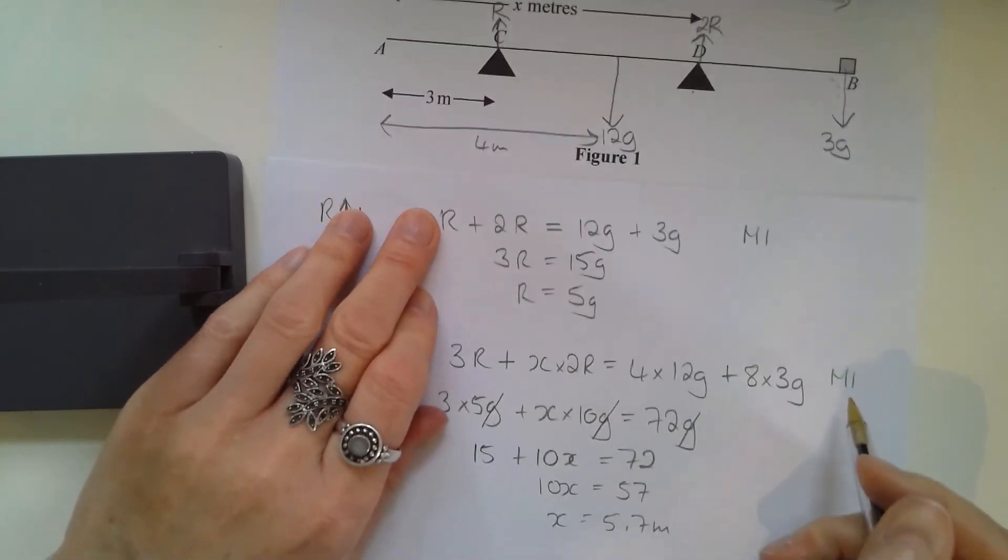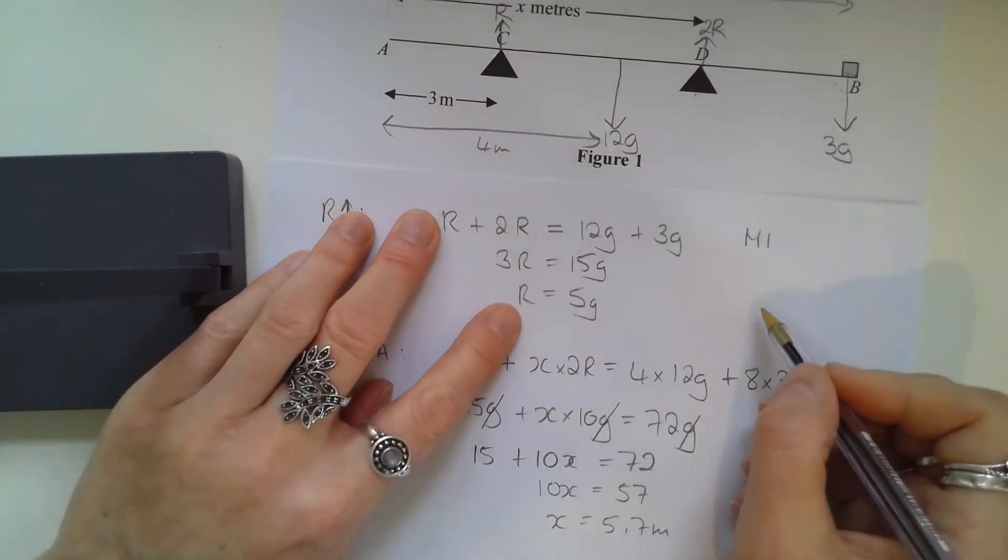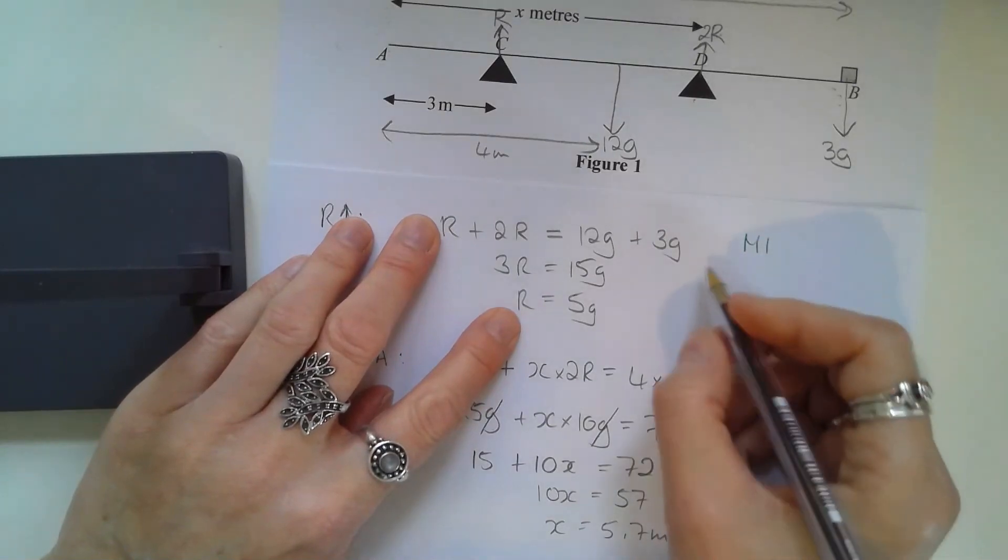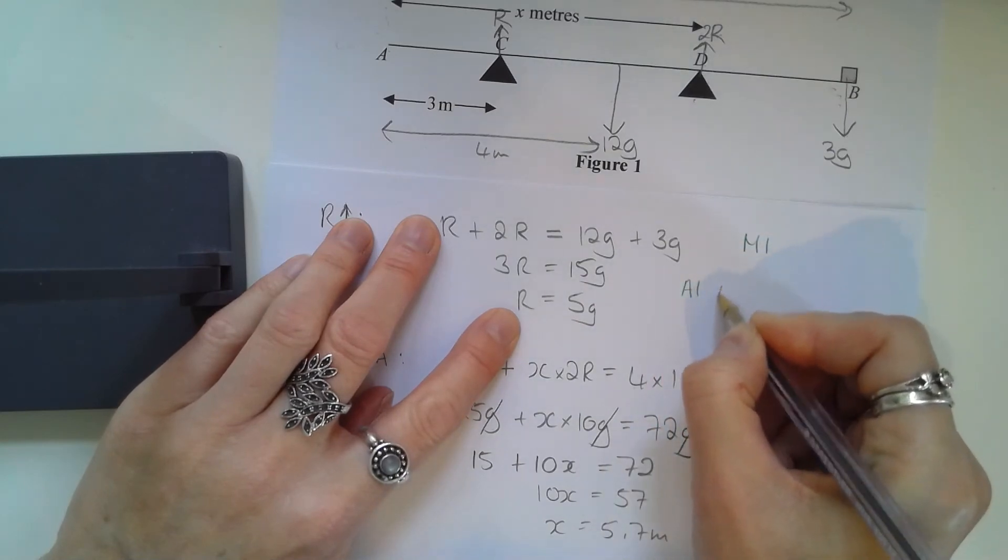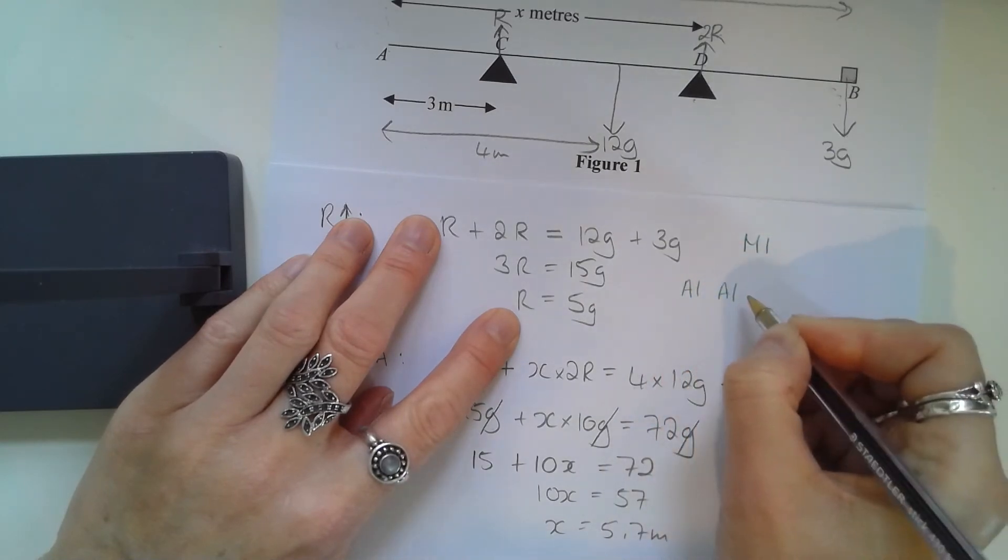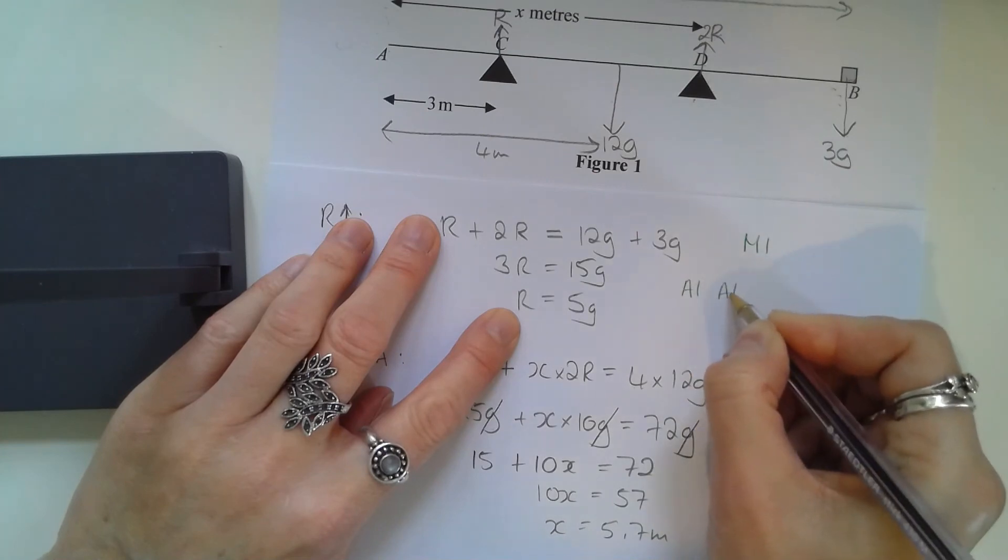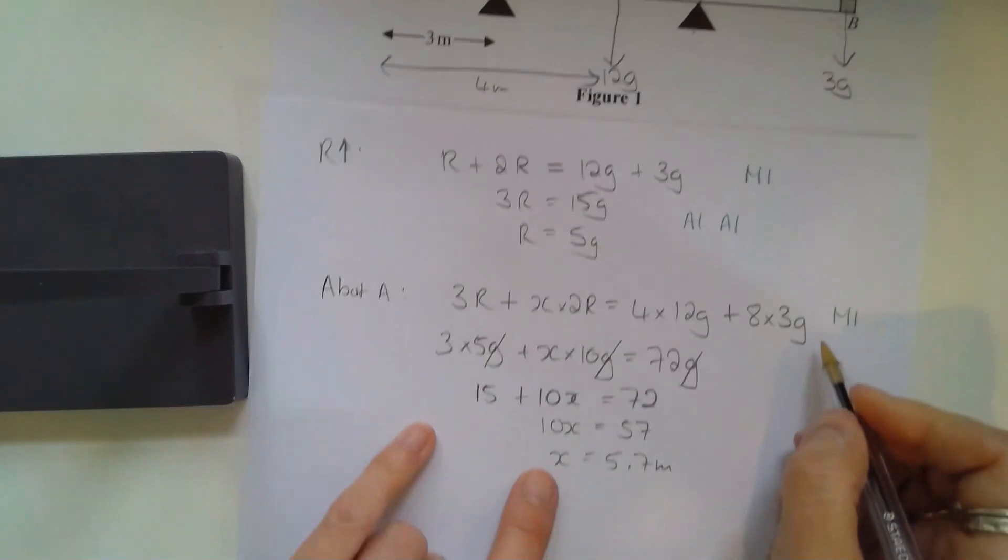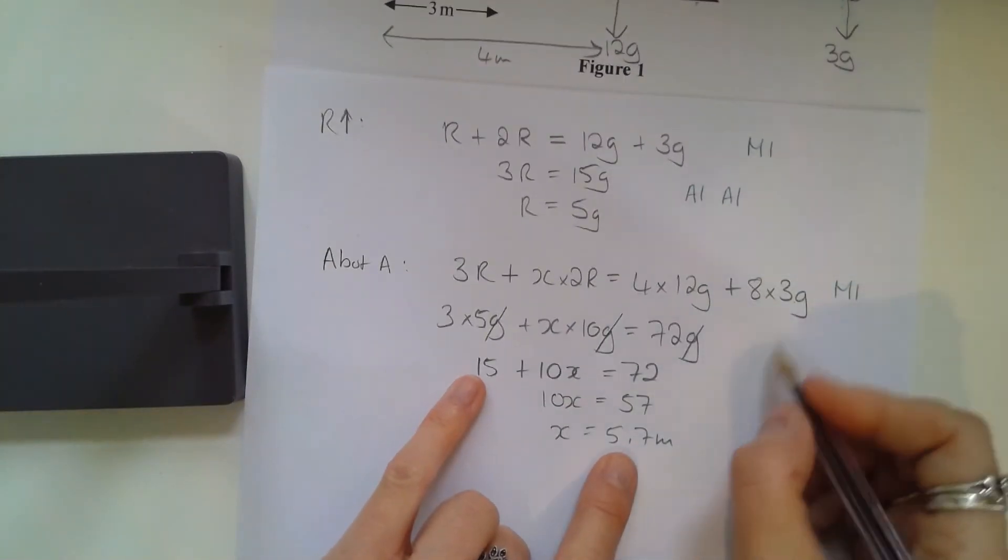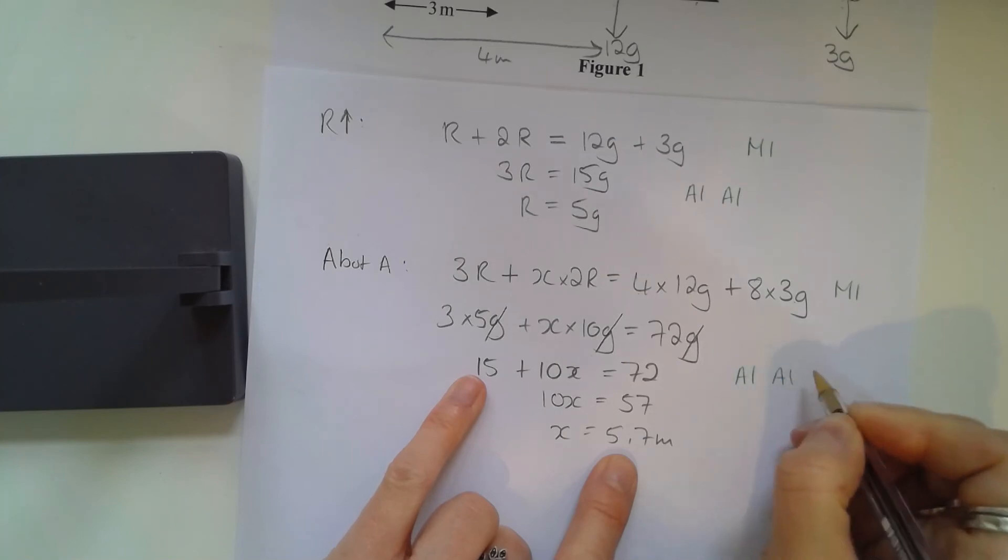Accuracy-wise, you'll get an accuracy mark for all terms included and all terms correct, or you'll get two accuracy marks for that, and they'll deduct a mark for each error. For the second part, again there are two accuracy marks: all terms correct, and subtracting one for each term that's incorrect.